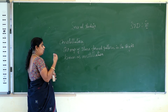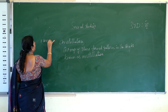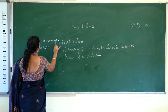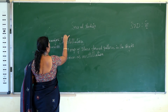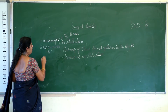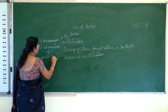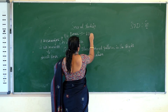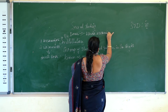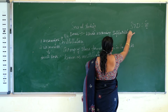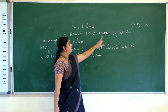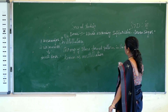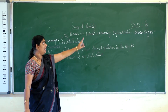One is Ursa Major and the second one is Ursa Minor. Ursa Major is also called Big Bear and Ursa Minor is also called Small Bear. In Hindi, the meaning for Big Bear is Sapta Rishi. The meaning of Sapta Rishi is Seven Sages.